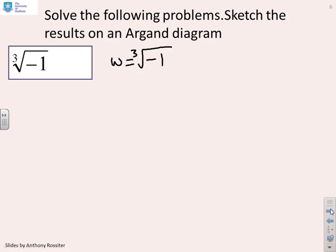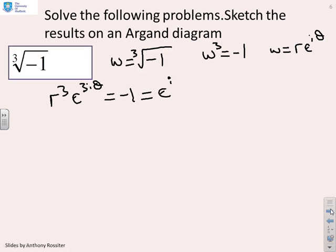And this is a classic problem that comes up in control theory quite often, especially in root loci. So we want to solve w equals the cube root of minus 1. And you remember, the way we said we'd solve this is essentially by cubing both sides. So saying, let's try and solve instead w cubed equals minus 1. And what we'd do is we'd say, let w equals r e to the i theta, and see where that takes us.